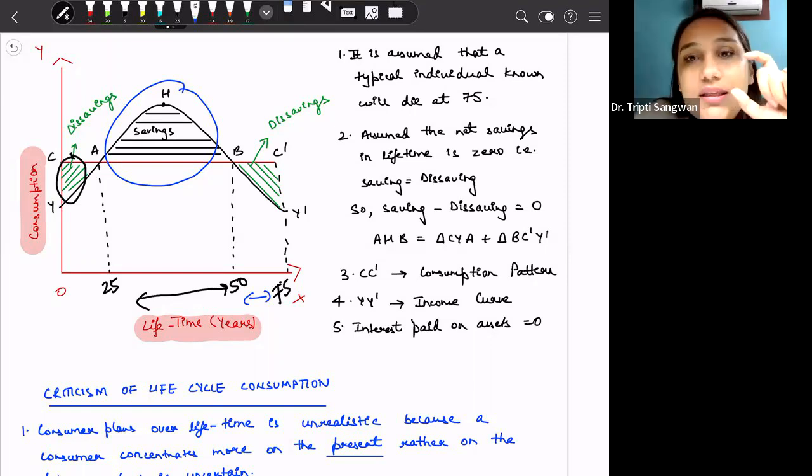So this total savings, which is denoted by this triangle A, H, B, this will be equal to dissavings that are these two triangles - that is C, A, Y and B, C dash, Y dash.